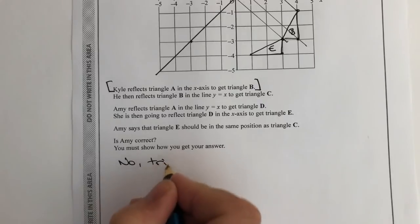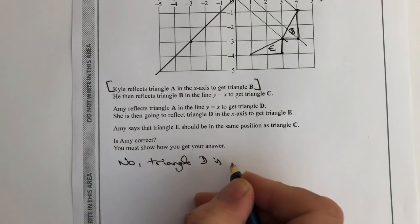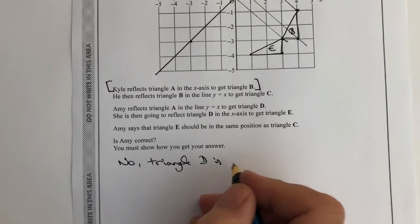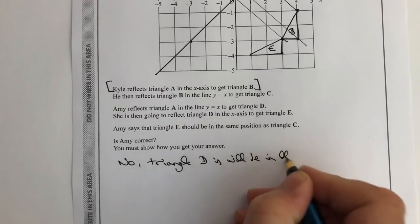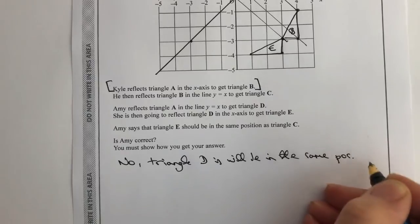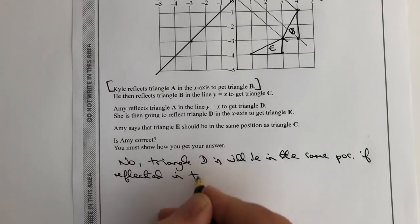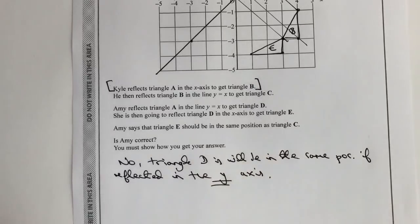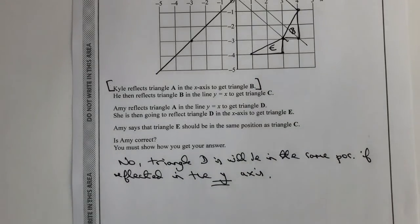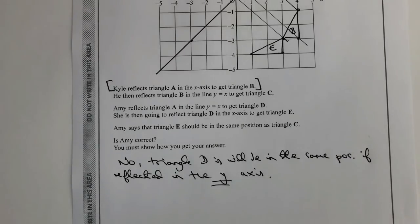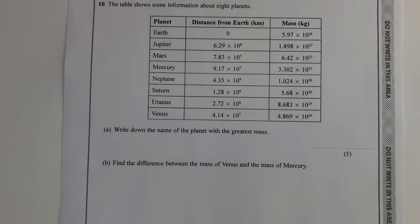If she'd reflected in the y-axis, she'd be absolutely right and it would be there. So I'll write: No - triangle D will be in the same position as C if reflected in the y-axis. For three marks it's relatively straightforward, it just takes a fair bit of time to work through, so you've got to be fairly careful with these sorts of questions.